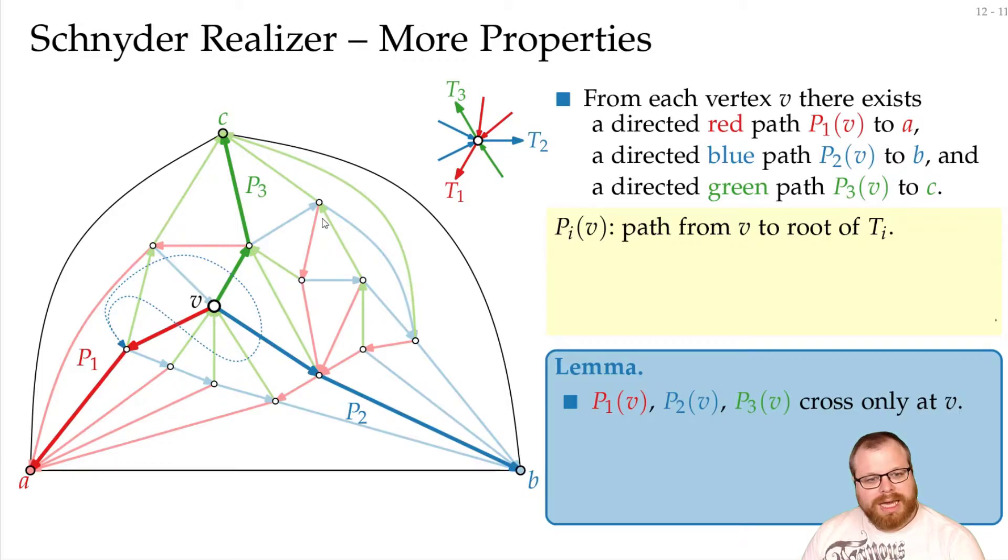But between entering and leaving, on the right side, we have an incoming red edge. But here on the right side, we only have outgoing red edges. So this is not possible. The same way, if we go from here to here, we go in with blue and leave with blue. And between them, on the right side, we must have an outgoing green, but this also is not possible.